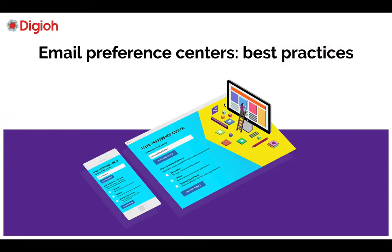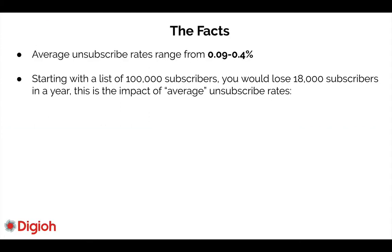Hey everybody, this is Rishi and I'm really excited to talk about email preference center best practices. We build a lot of custom email preference centers here and I'm going to show you the best tips for a custom email preference center and why you should use them. First, the average unsubscribe rate is between 0.09% and 0.4%. Unsubscribes are not a bad thing — they actually keep email deliverability high and keep your email list clean.